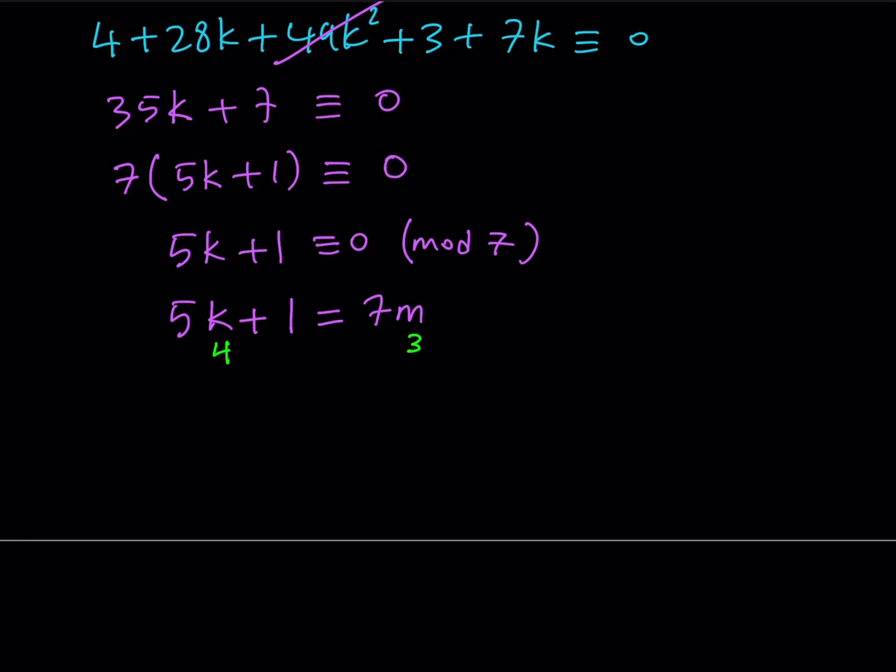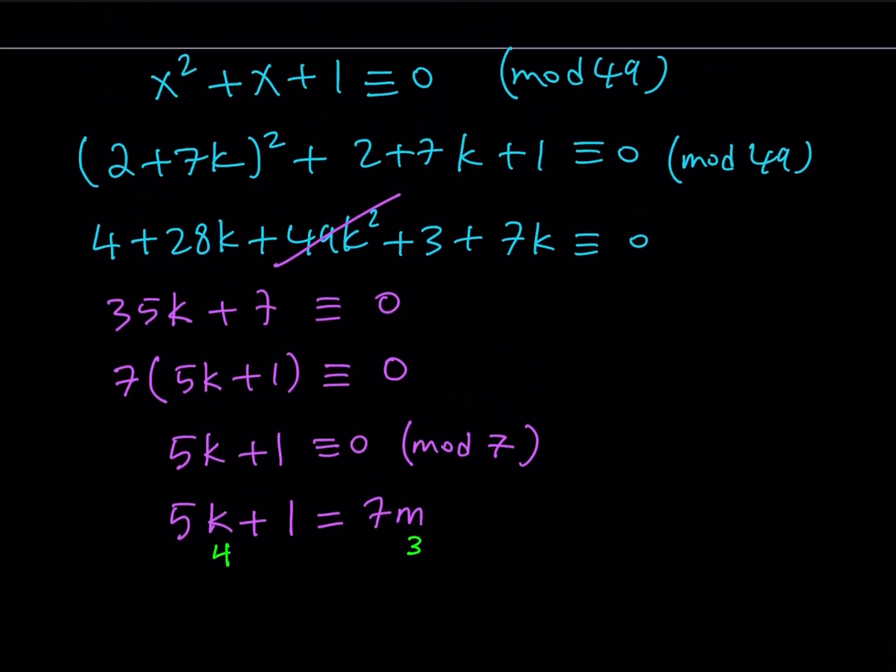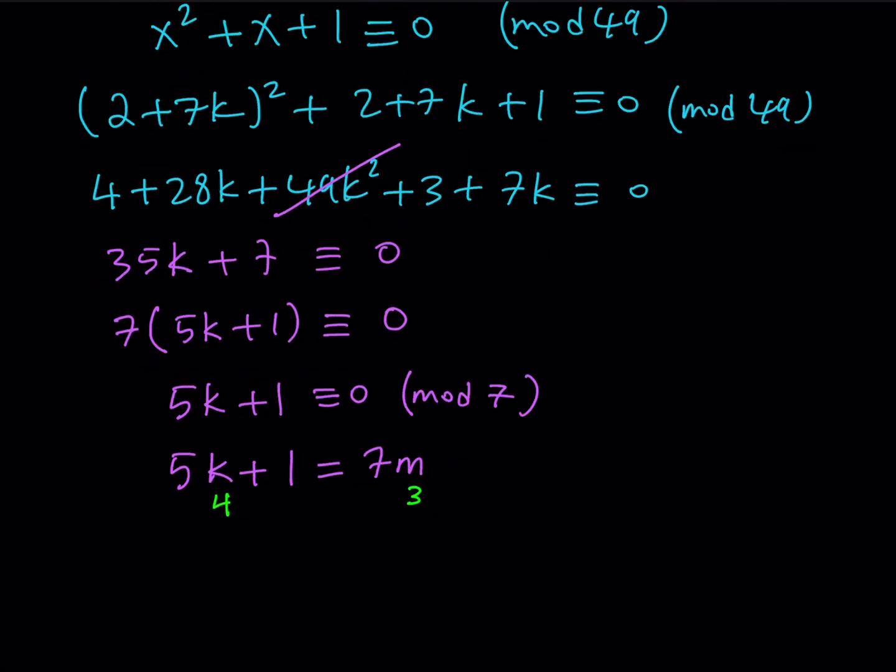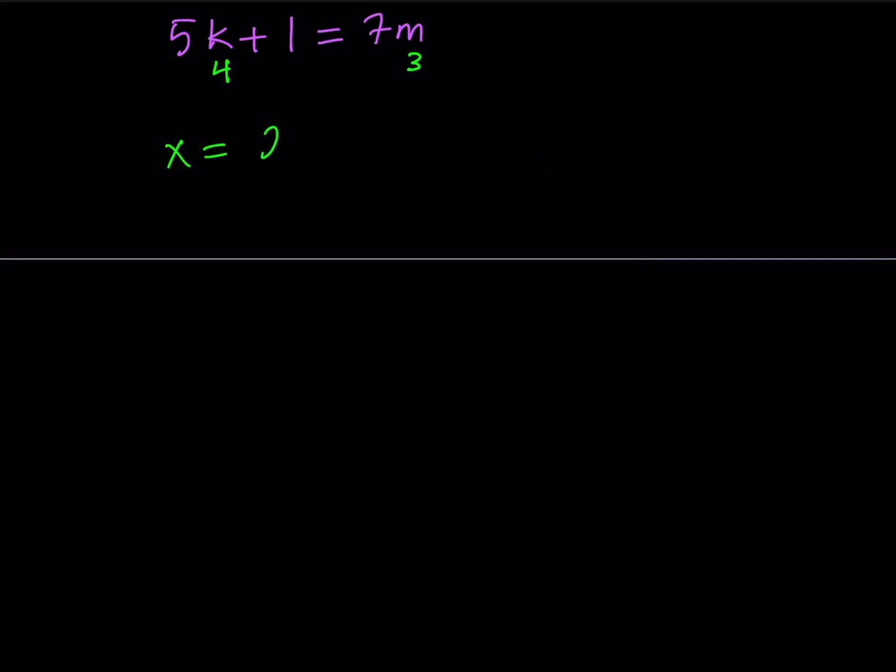Now, I'm not that much interested in m here because k is more important. Remember, our assumption was x equals 2 plus 7k. So let's go ahead and write that down. x equals 2 plus 7k. And I just find k to be 4. So x is equal to, if you replace k with 4, you're going to get 2 plus 28, which is 30. And I want to write my answer, obviously, in mod 49. So I'm going to be writing it as x is congruent to 30 mod 49.